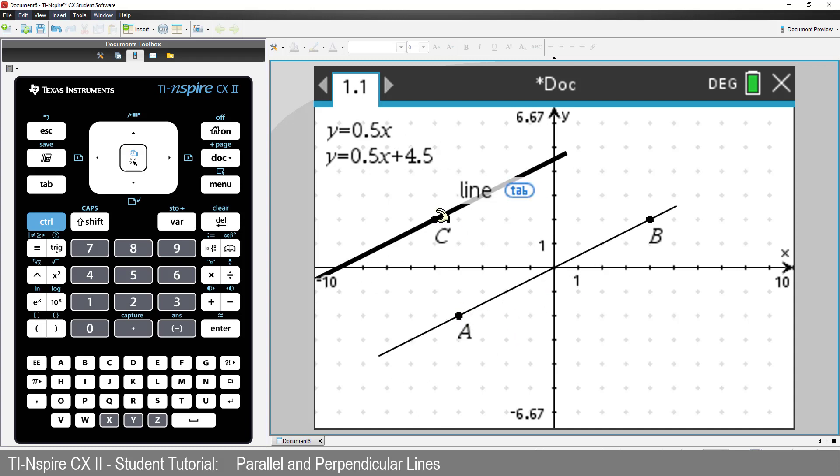We can also move our point on the parallel line to a new location. And the line will always remain parallel. Notice that the slope of each line appears to be the same.